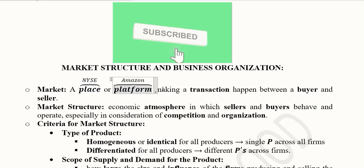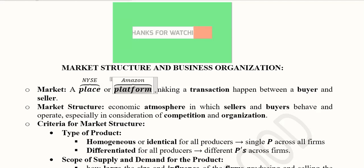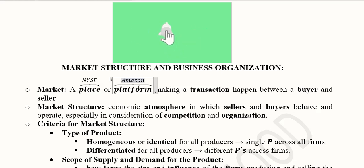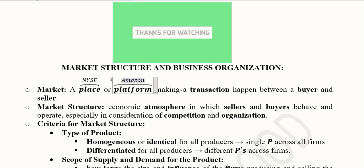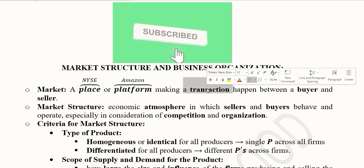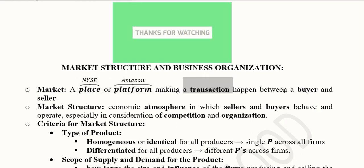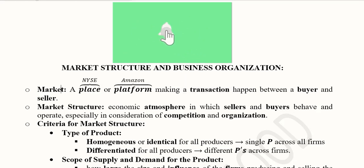Let's define the market. It's basically a kind of place, or in this digital era it can be a platform — a digital platform which does not necessarily exist in physical terms. For instance, we all know about Amazon, how we are able to buy things via Amazon. It's a platform that exists virtually, not physically. In contrast, a physical market like those in New York or any other city is a place where people come and go. No matter whether it is a platform or a place, transactions take place, and there are buyers and sellers in it.